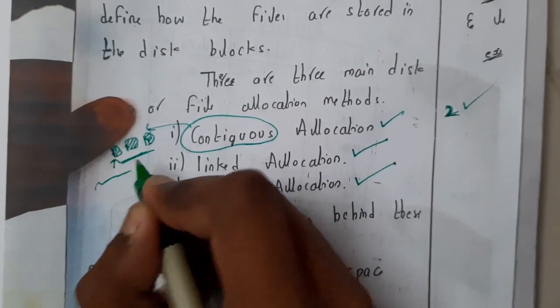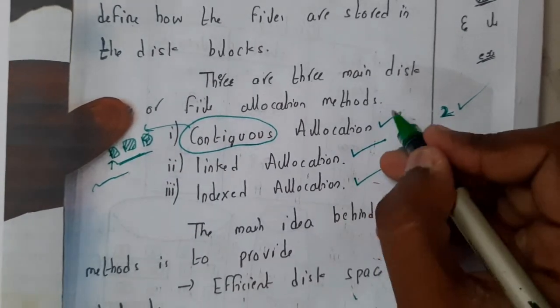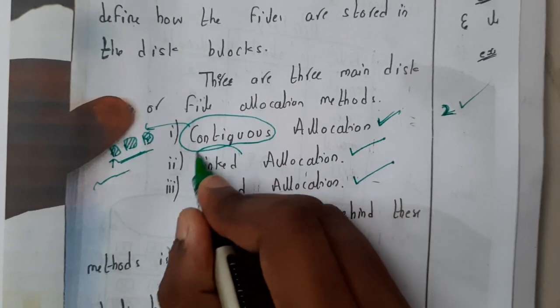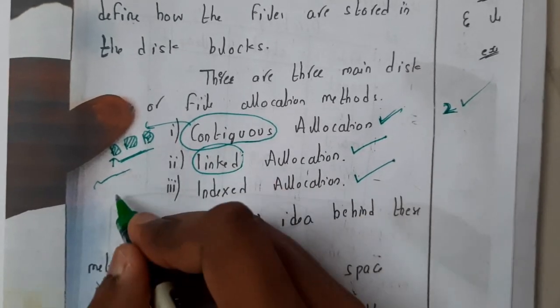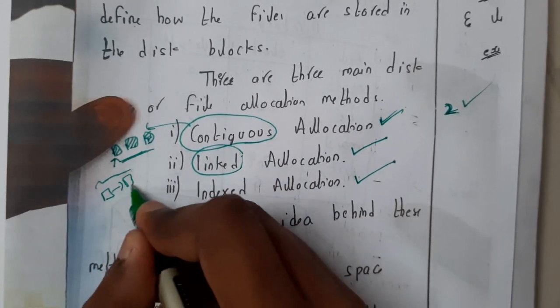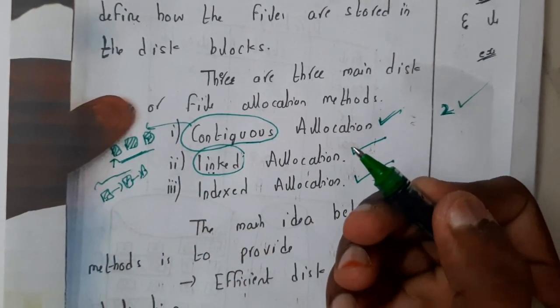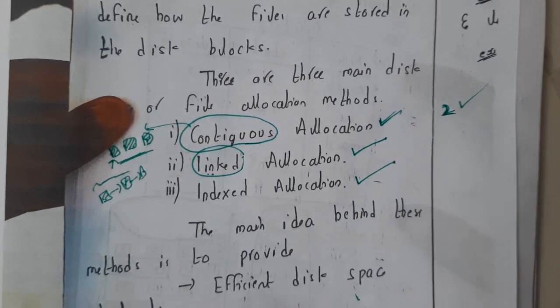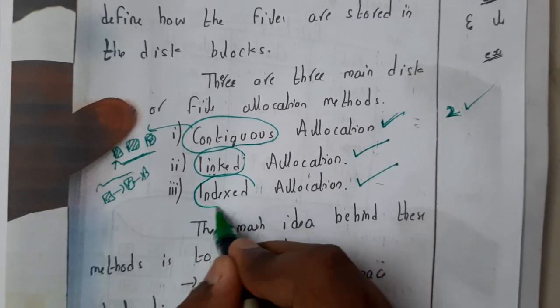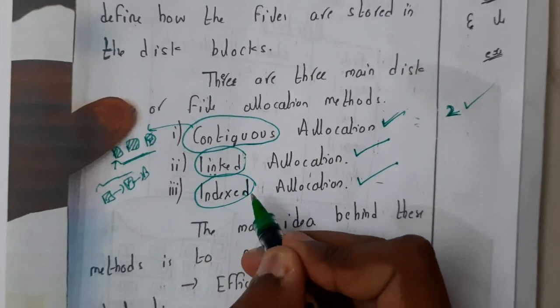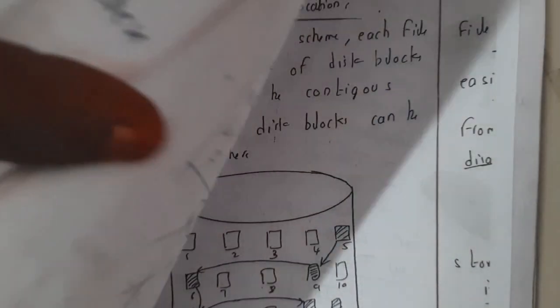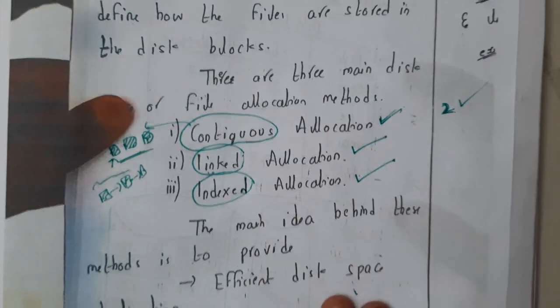Contiguous means the blocks which are one after the other. Linked - I hope everyone knows about linked lists where these may not be contiguous, right? Linked list means they will be having a particular link. Then indexed is nothing but we will be having an index according to which they are stored. So I gave an introduction for all three methods.